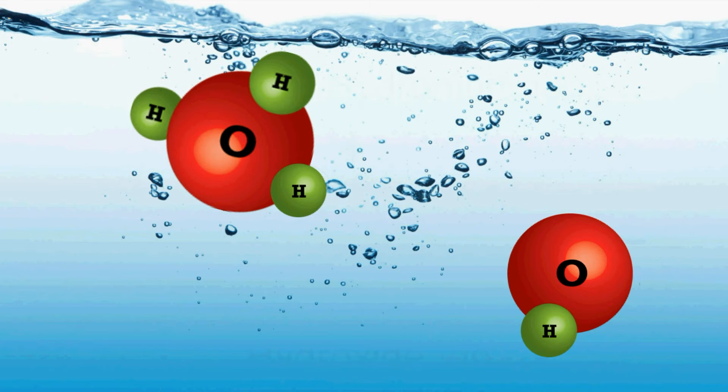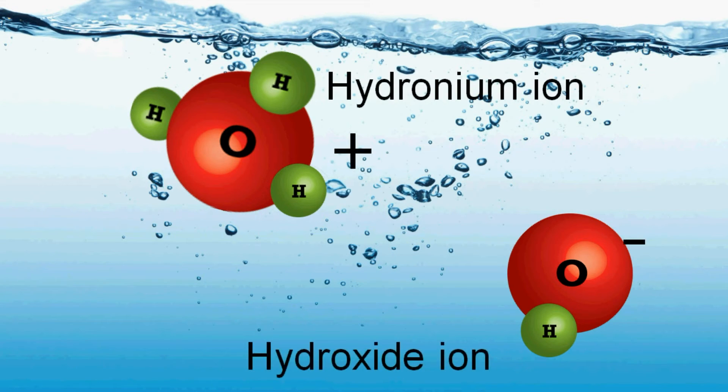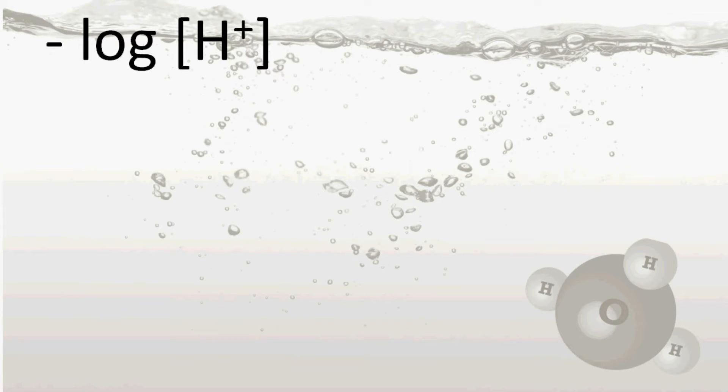And it becomes a hydronium ion, and this is a hydroxide ion. pH is actually a measurement of concentration of hydrogen or hydronium ion in a solution. The formula for finding pH is minus log molecular concentration of hydrogen or hydronium ion.